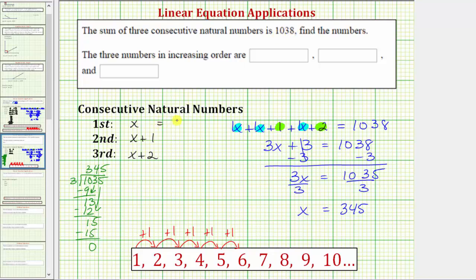X equals 345, and therefore x plus one is 346, and x plus two equals 347. And we are asked to give the numbers in increasing order. So again, we have 345, 346, and 347.